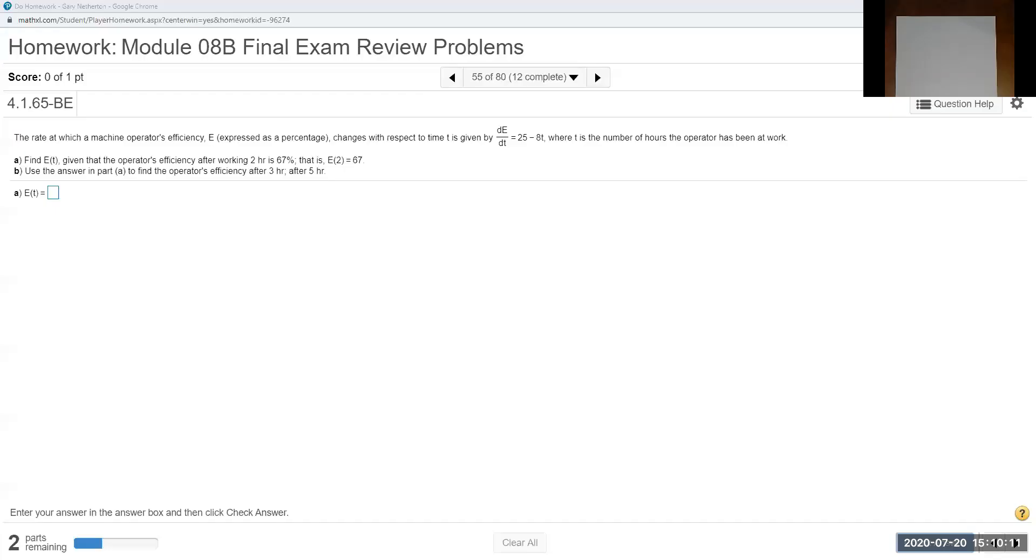We are now ready for problem 55. It's in the form of a story problem, but really we just have to take an integration. The rate at which a machine operator's efficiency E, expressed as a percent, changes with respect to time is given by a derivative equation.